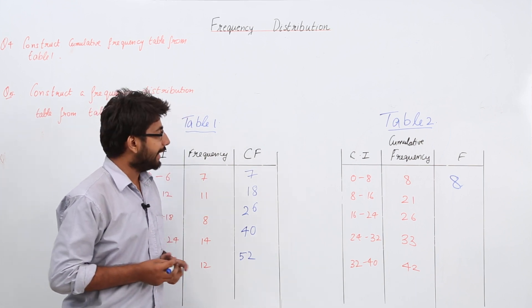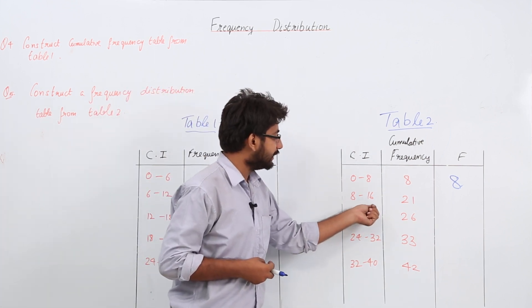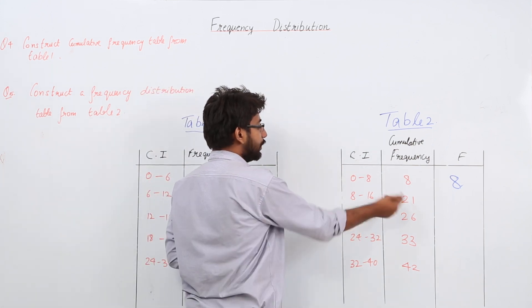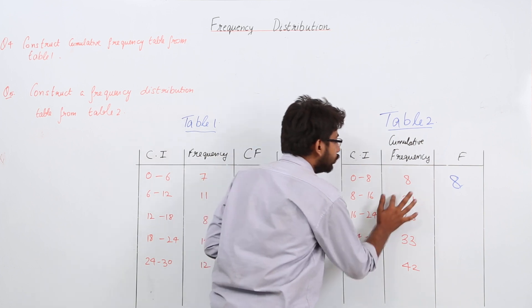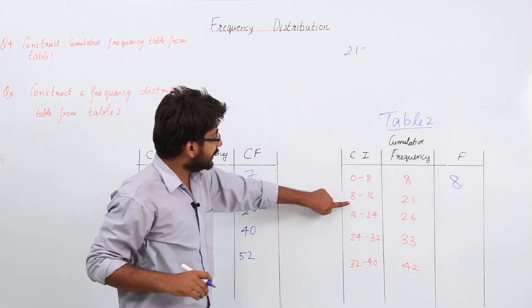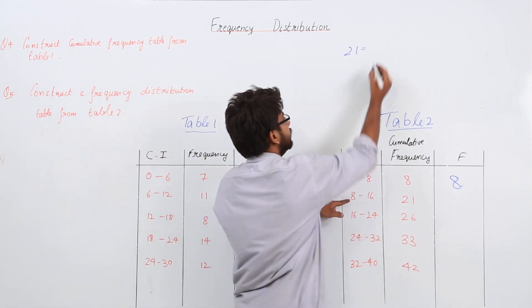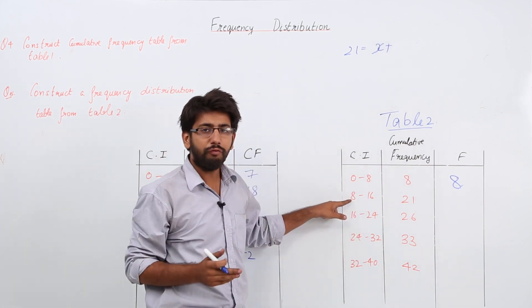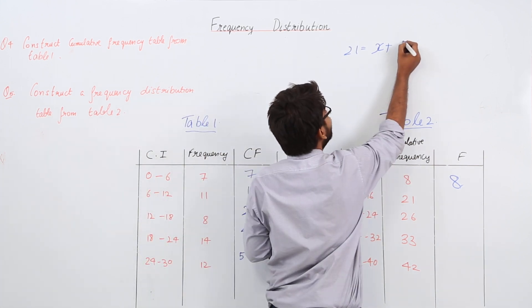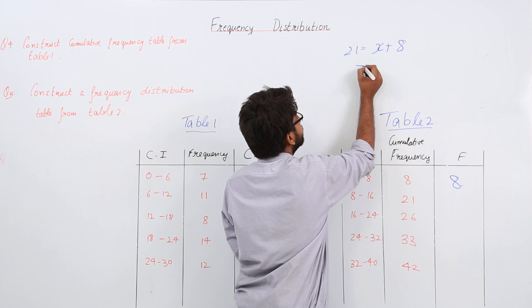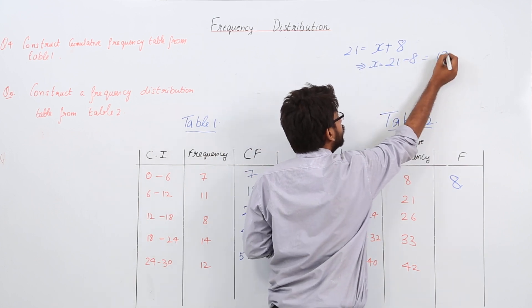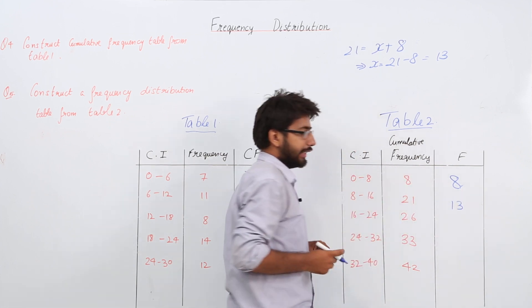How do we find the frequency of the next class interval 8 to 16? The CF of 8 to 16 is 21, and this 21 equals the frequency of this class. Let's say it equals x plus the frequency of all the previous classes, which in this case is only 8. So x plus 8 equals 21. This implies x equals 21 minus 8, which equals 13. So the answer is 13.